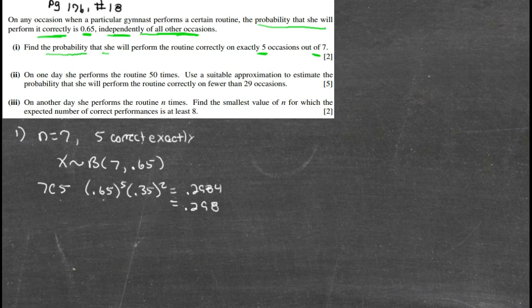Now in part two, it says that she performs this same thing 50 times and they want us to use a suitable approximation to estimate the probability. Again, when you see that, they're begging you to take this binomial and approximate it with a normal distribution.